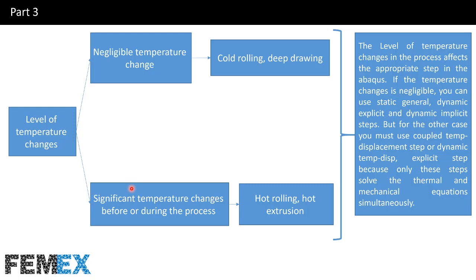If the temperature changes before or during the process are significant, like in hot rolling or hot extrusion, you must use the coupled temp-displacement step or dynamic temp explicit step. The coupled temp-displacement step is solved using the Abaqus standard solver, and the dynamic temp explicit step is solved using the Abaqus explicit solver. Only these two steps account for the fully coupled behavior between the temperature field and the mechanical field.